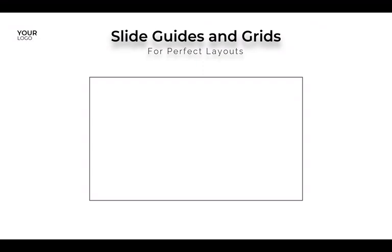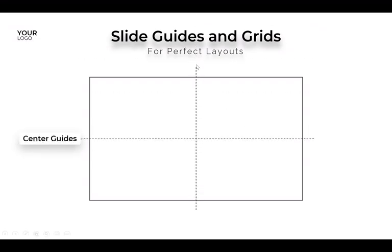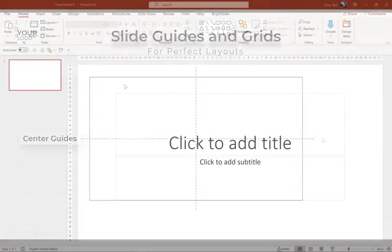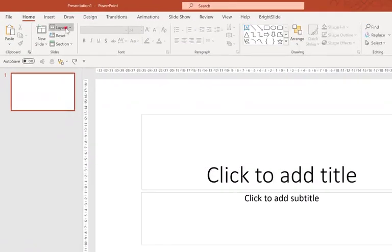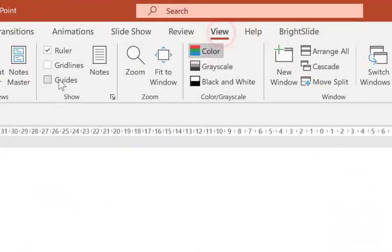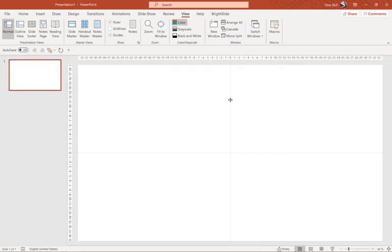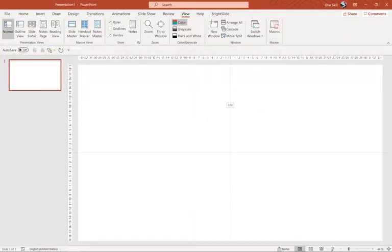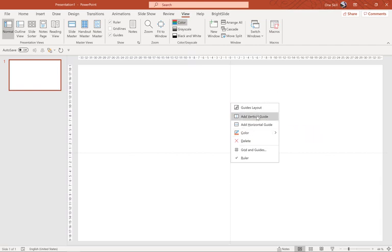Now let's talk about slide guides and grids that help us create awesome looking layouts. If you have any experience with PowerPoint you might have seen these center guides. Let me jump back to our presentation and choose a blank slide layout so we can see our guides better. Go to the View tab and click on Guides. Here we can see one vertical and one horizontal guide, placed at zero both vertically and horizontally. You can change their position and their color, and of course we can add additional vertical and horizontal guides.